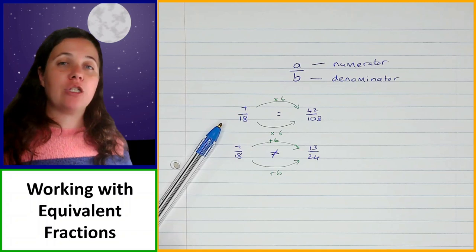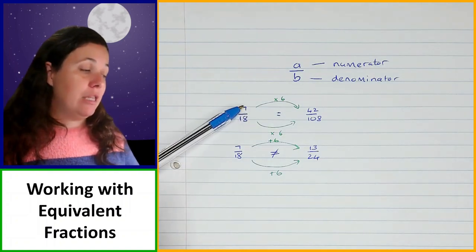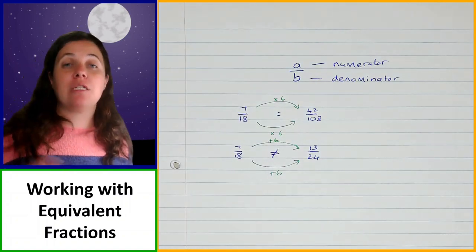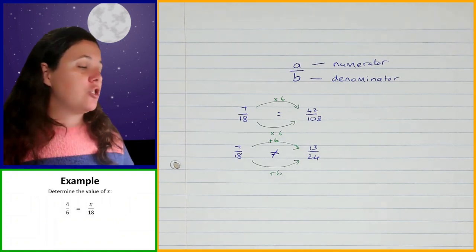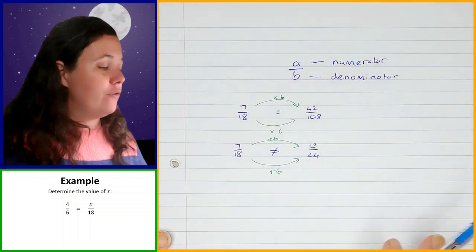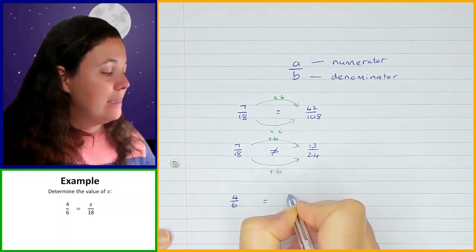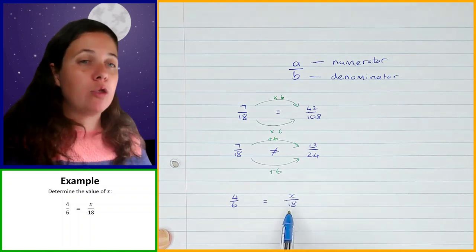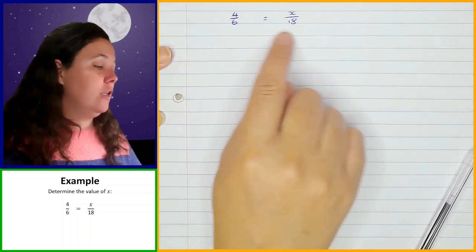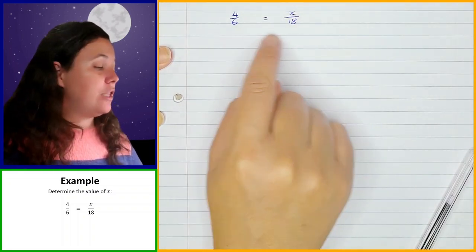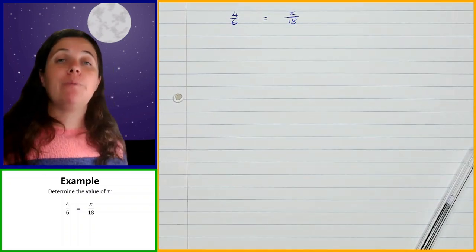When we're working with equivalent fractions, we multiply or we divide by the same amount in the top and the bottom — that will make the fraction remain equivalent. Let's have a look at an example. We've got 4 over 6, and we need to work out the value of x where x is over 18, and these are equal to each other, which means they are equivalent. As soon as two fractions are equal, it means that they are equivalent.